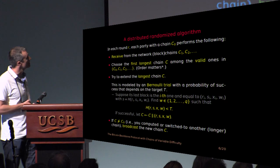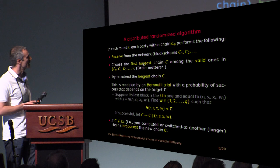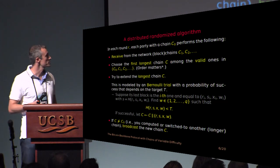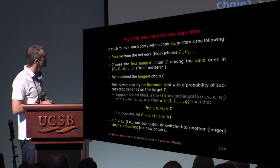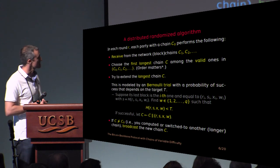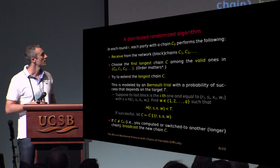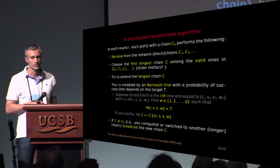After choosing the longest chain, the party now is trying to extend it. And this is really modeled by a Bernoulli trial where the probability of success depends on the target t that the block should have. And finally, if the party is successful in this Bernoulli trial or if it just got a longer chain from the network, in the end this new chain is broadcast to all the users.